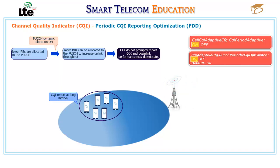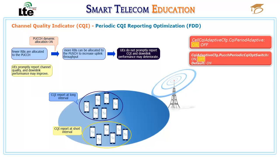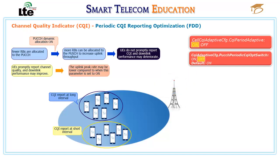If this parameter is set to OFF, more UEs report CQIs at short intervals, the UEs promptly report channel quality, and downlink performance may improve. However, the uplink peak rate may be lower than that obtained when this parameter is set to ON.